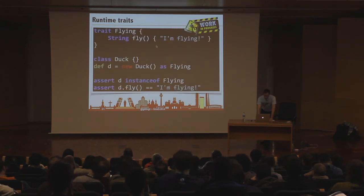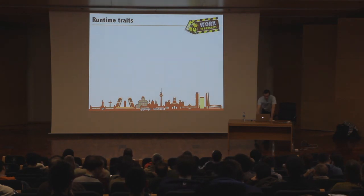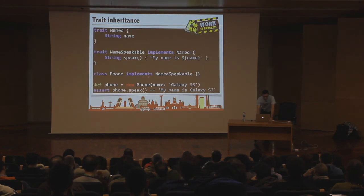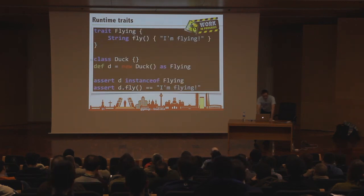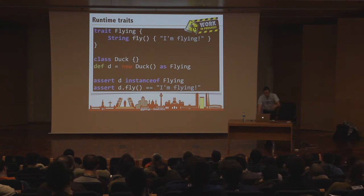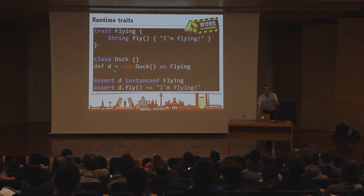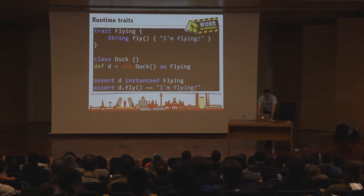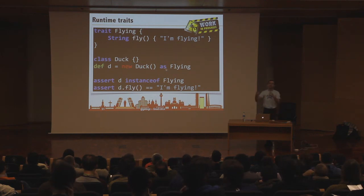We also have runtime traits. Rather than defining a class that implements a trait, you can take an existing class instance — perhaps from an external library — and apply a trait to it at runtime. You do 'new Duck() as Flying', which returns a proxy over the Flying interface. That proxy has the fly() method available. So it's a runtime trait application, not a compile-time class definition.